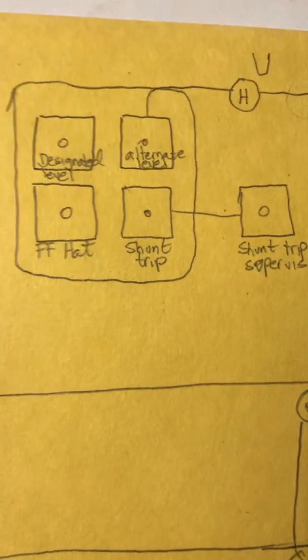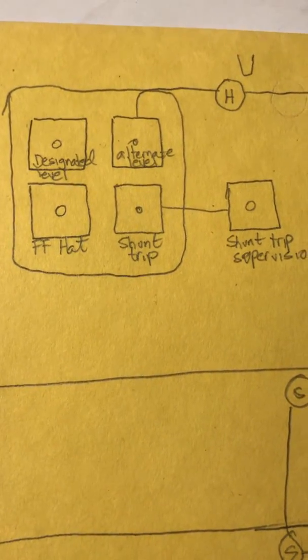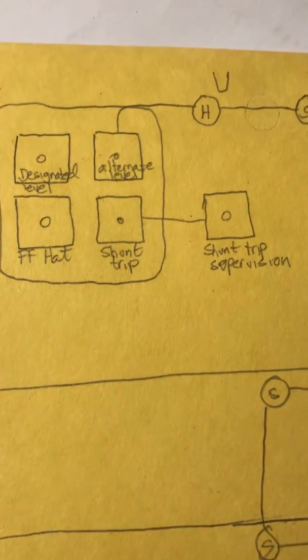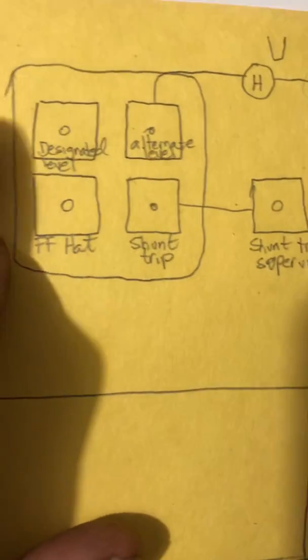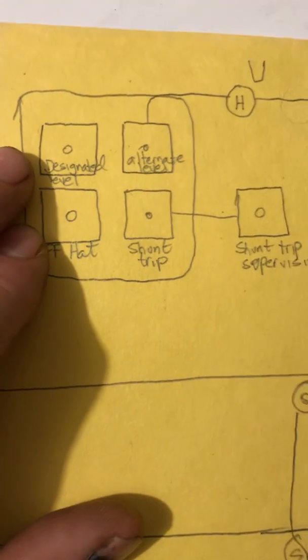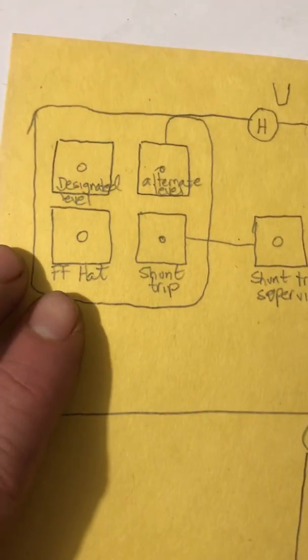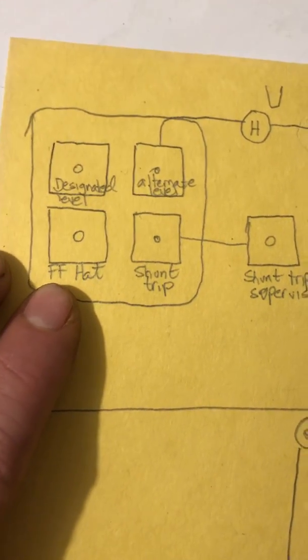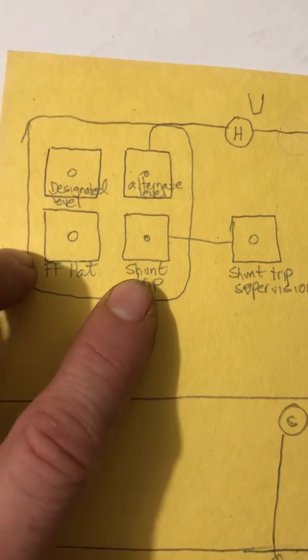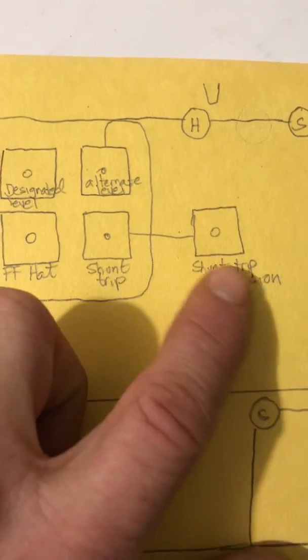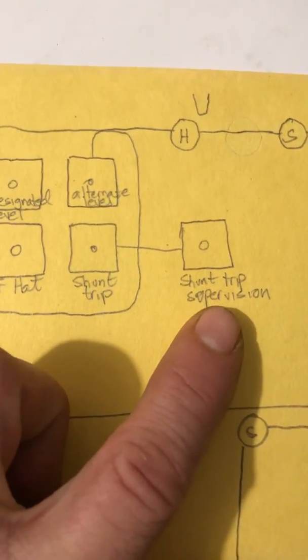The four control circuits you're going to need are: one for designated level recall, alternate level recall, the firefighter hat, shunt trip, and then you're going to have shunt trip supervision module.